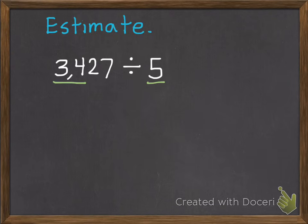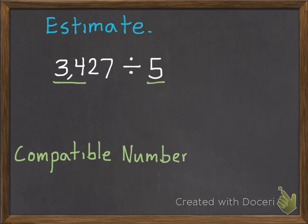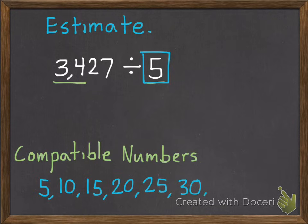So I need a compatible number that 5 can go into that's close to 34. So I'm going to find the compatible numbers of 5, and the numbers that 5 can go into easily, mentally, are 5, 10, 15, 20, 25, 30, 35, 40. So basically we're finding all our multiples of 5.